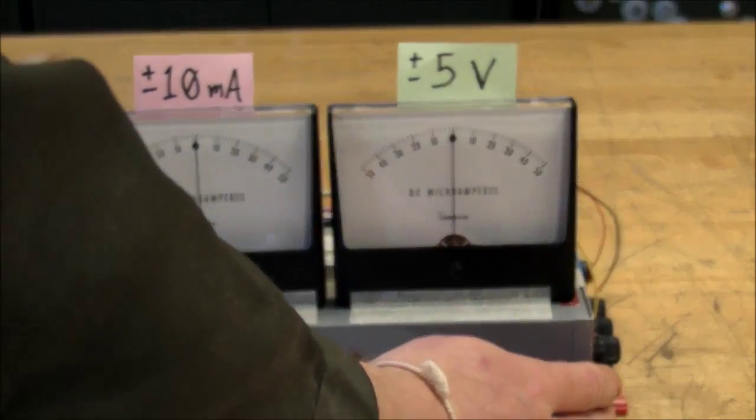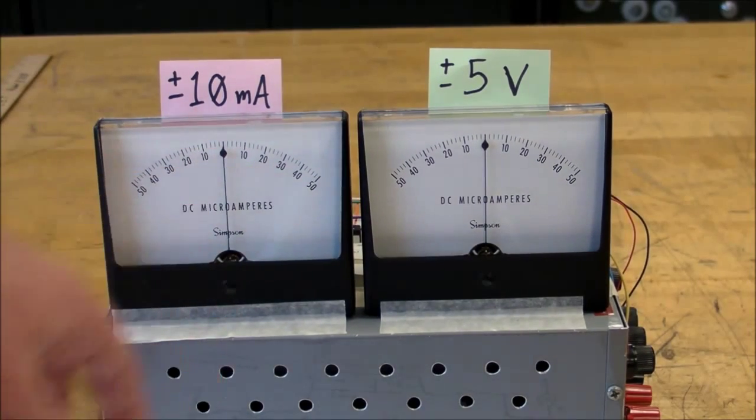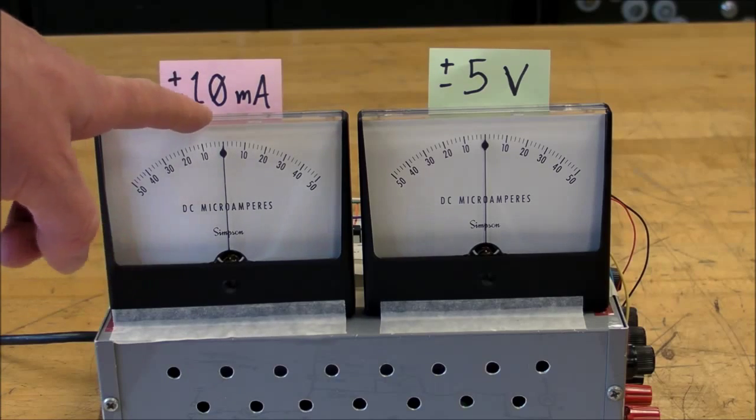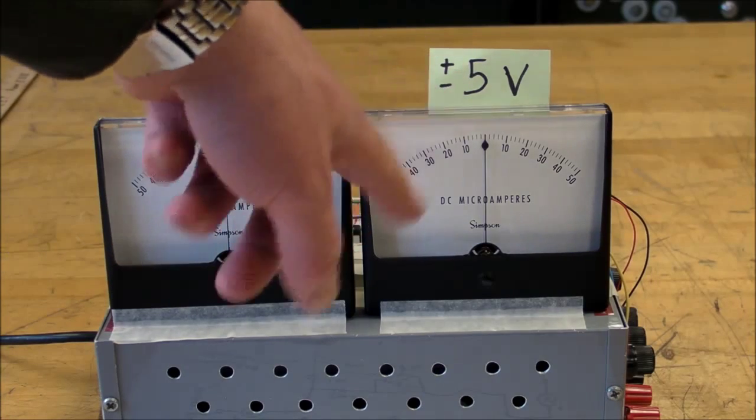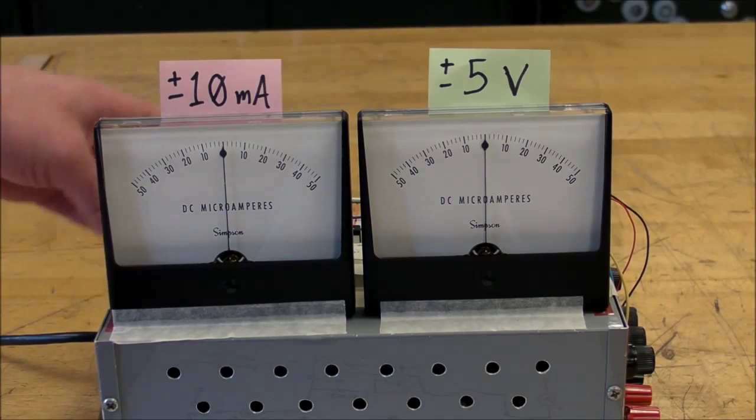The two meters on here are just a couple of Simpson analog DC micro amp meters with plus minus 50 micro amp scale. I've converted them into plus minus 10 milliamps for this one and plus minus 5 volts for that one.